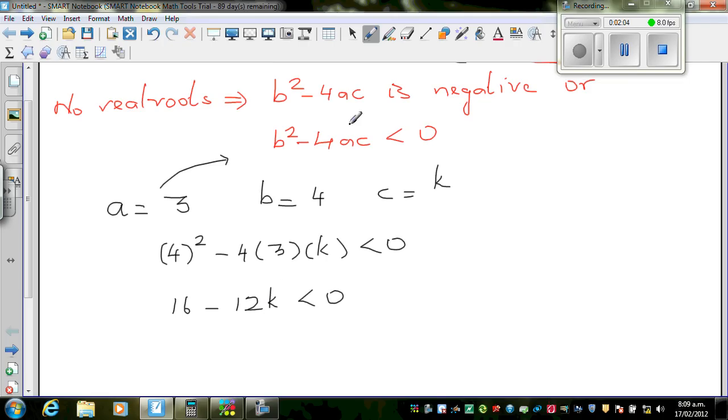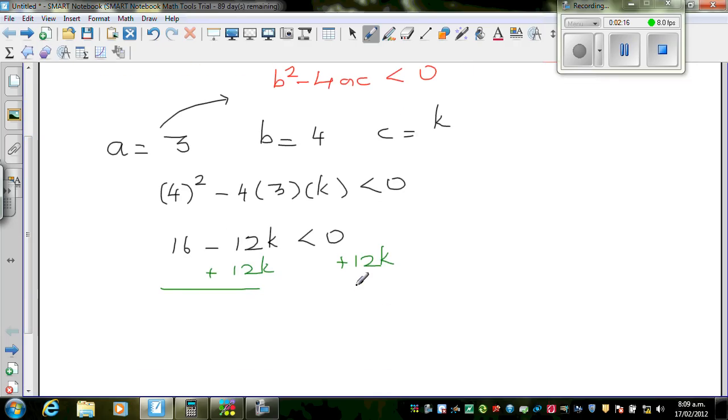If you add 12k to both sides, inequality can be treated as equality. If you add 12k to this side, you can add 12k to this side. This changes and this gets cancelled, so 16. Let me use a blue color now. This and this gets cancelled. 16 is less than 12k.